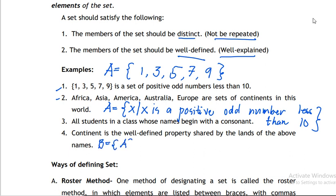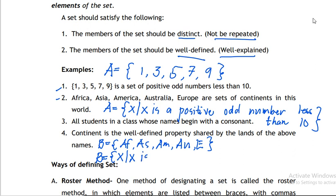For number two, in roster method: B = {Africa, Asia, America, Australia, Europe}. For the rule or defining method: B = {x | x is a continent in this world}.